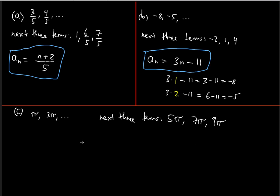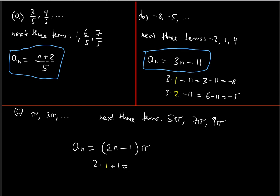Now for the nth term formula. There will definitely be pi outside, since pi appears in all terms. When n equals one we should get pi, but with just n we'd get one pi for n=1 and two pi for n=2, yet we need three pi for the second term. So the difference is two pi — we need 2n inside, but when n equals one that gives two, not one, so we subtract one: 2n − 1.